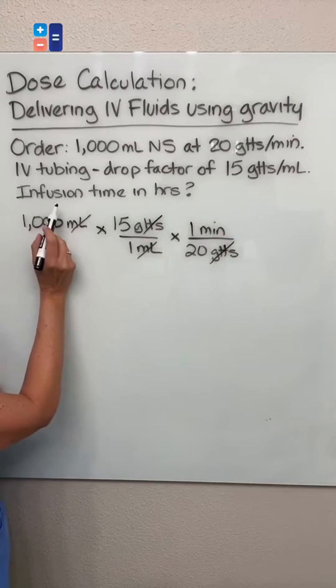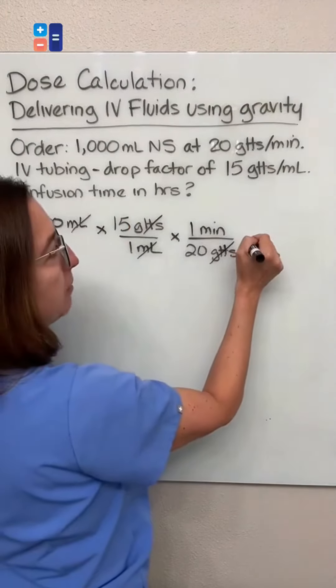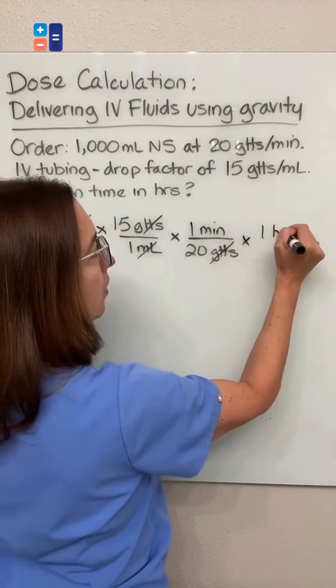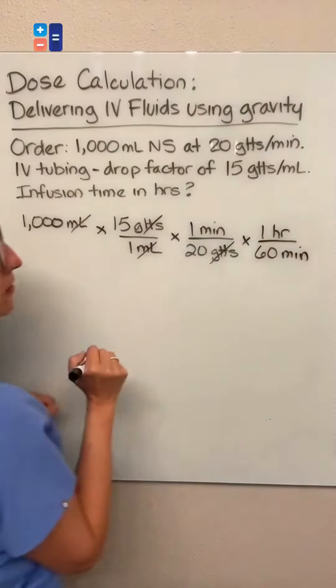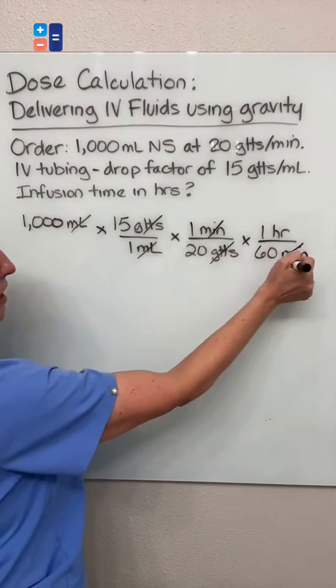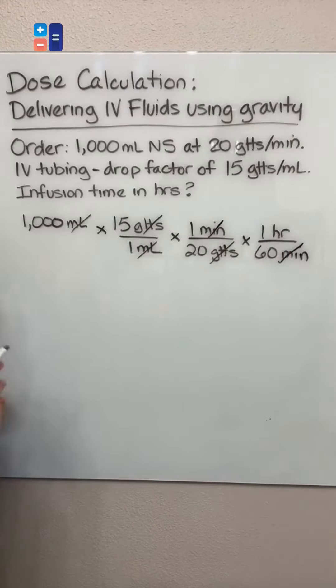But we are asked for the infusion time in hours. So I also need to multiply by a conversion factor, which is one hour equals 60 minutes, such that my minutes cross off. And if I multiply this out, I will end up with the number of hours it takes to provide this infusion.